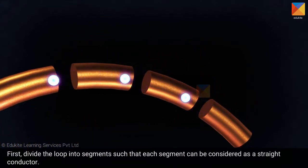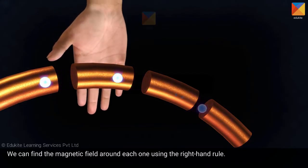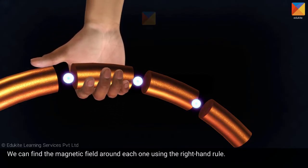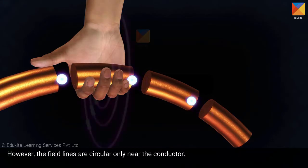First, divide the loop into segments such that each segment can be considered as a straight conductor. We can find the magnetic field around each one using the right hand rule. Point the thumb of your right hand in the direction of the current and the direction in which your fingers wrap around the segment is the direction of the magnetic field.